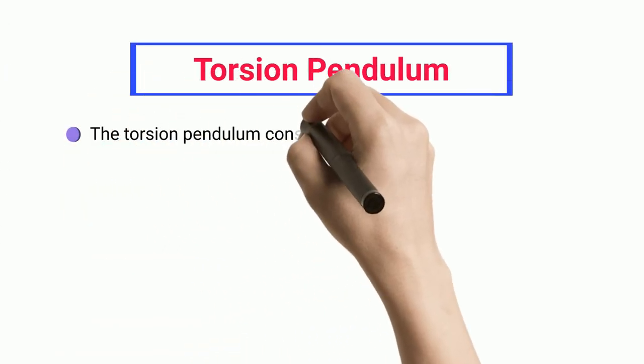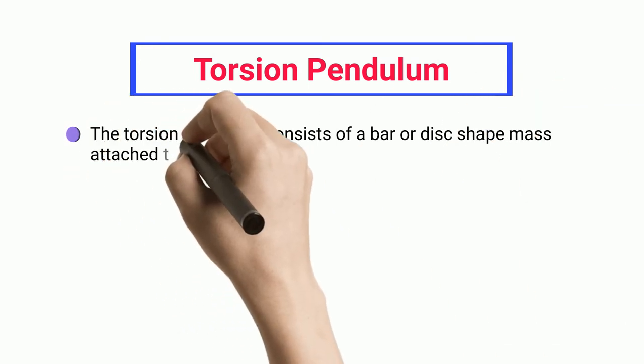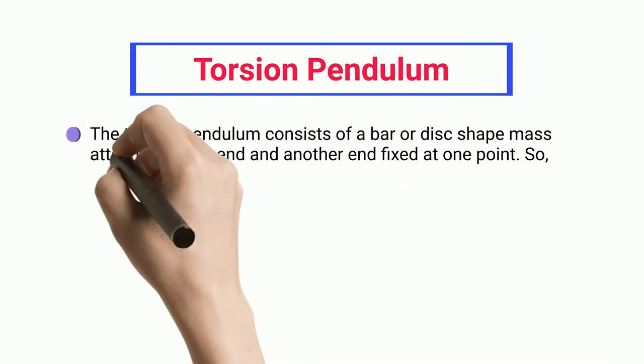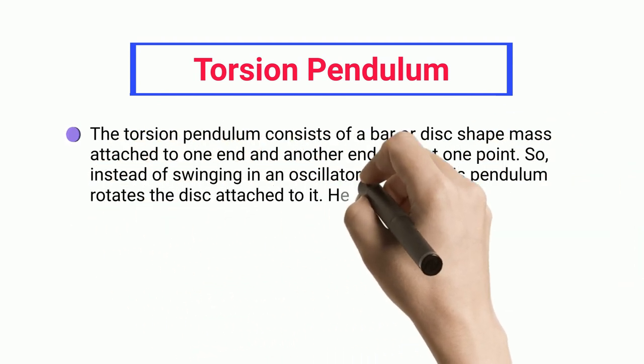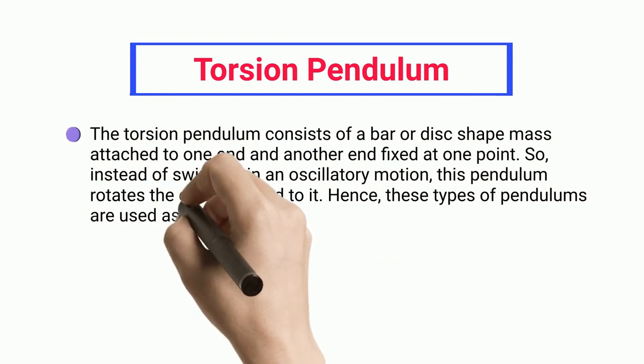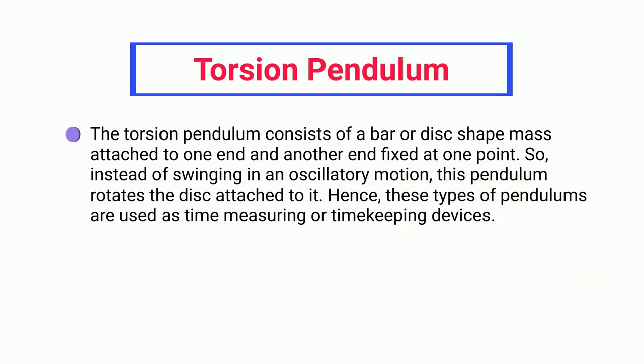Torsion Pendulum: The torsion pendulum consists of a bar or disc-shaped mass attached to one end and another end fixed at one point. Instead of swinging in an oscillatory motion, this pendulum rotates the disc attached to it. These types of pendulums are used as time measuring or time keeping devices.